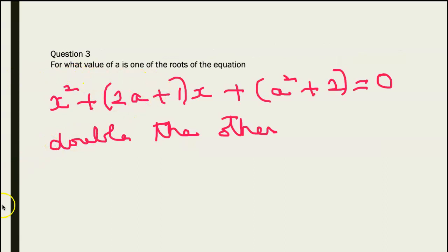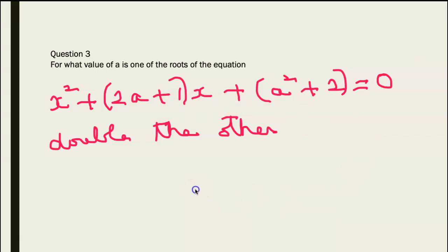For what value of a is one of the roots of x² + (2a+1)x + (a² + 2) = 0 double the other? So let the roots be alpha and 2alpha. So I have alpha + 2alpha = -(2a+1), and alpha × 2alpha = a² + 2. So 3alpha = -(2a+1), or alpha = -(2a+1)/3.